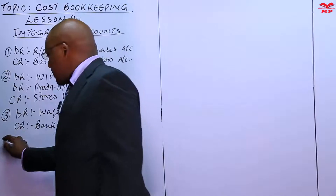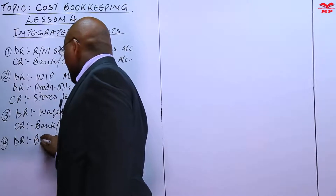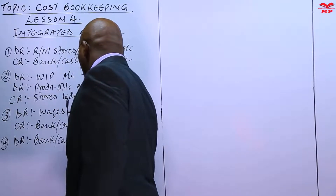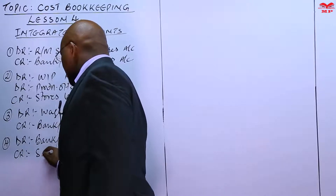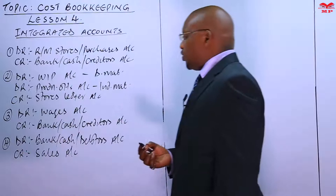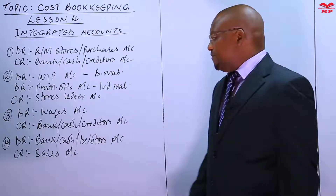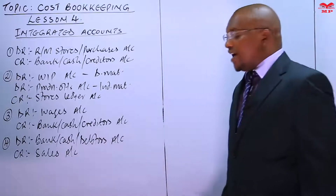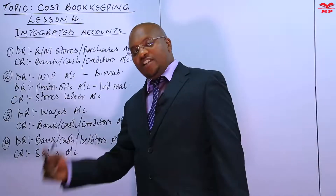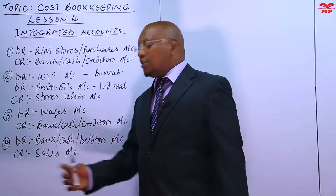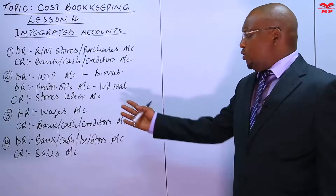The other difference as number four is about sales. We debit the bank, cash, or debtors accounts, and credit the sales account. There's a difference because in the other system we were debiting the general ledger as we credit the sales, but this time we shall not do that. The other difference is about the transfer of profits — we shall not transfer the profit to the general ledger; we just transfer profits to the balance sheet. Whatever profit remains, that balance transfers to the capital or balance sheet.